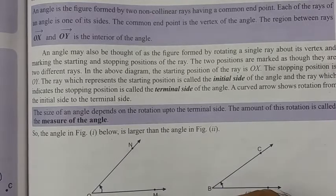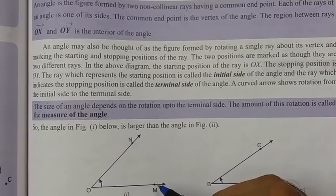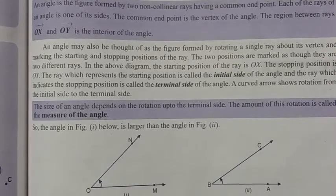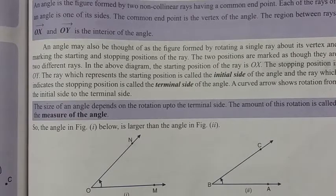So here an angle is being formed. It is known as angle MON. Now, on page number 240, naming of an angle. An angle may be named in three ways: with three letters, with one letter, and with numerals or a small letter.